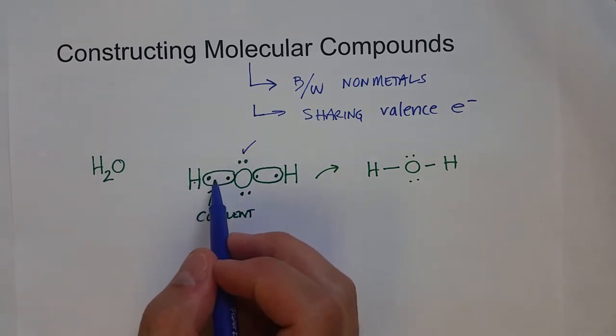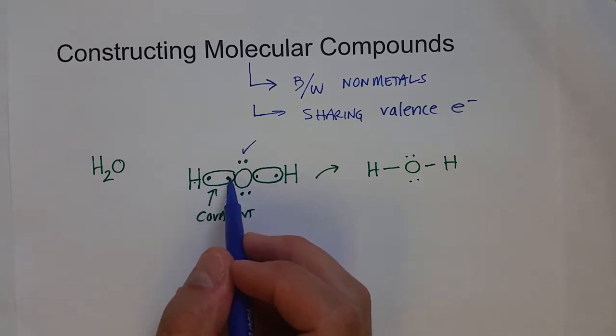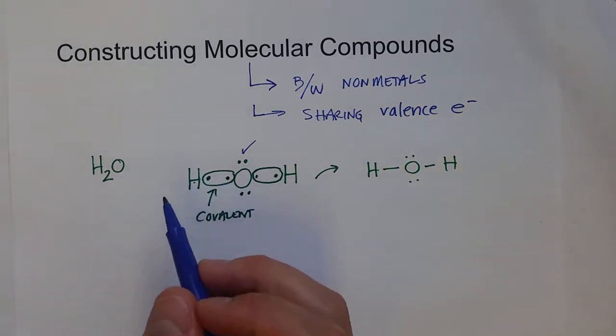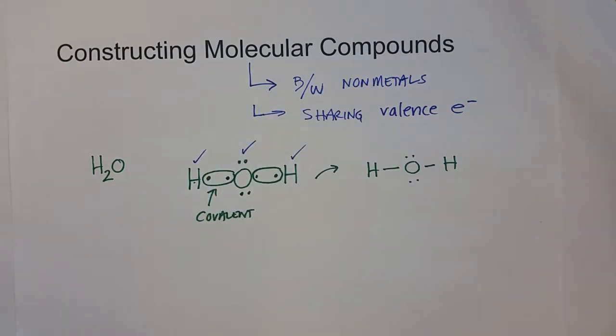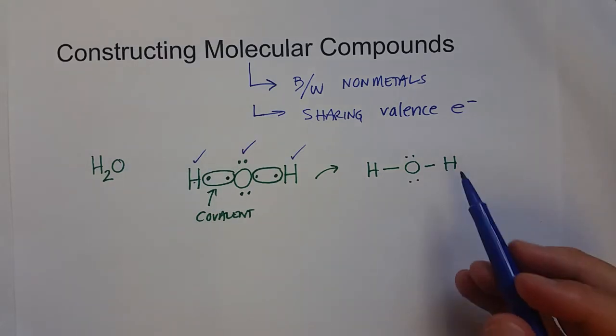If you remember, hydrogen can satisfy what I call the duet rule by getting to two valence electrons to be just like helium. So hydrogen will always form one bond to get to two valence electrons in a very stable configuration.